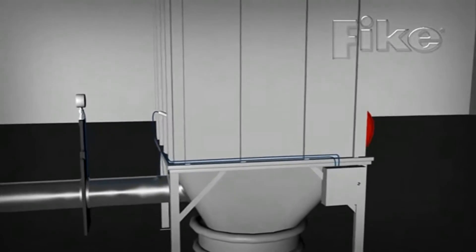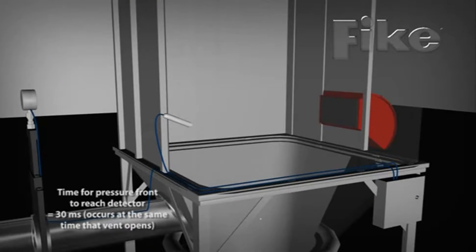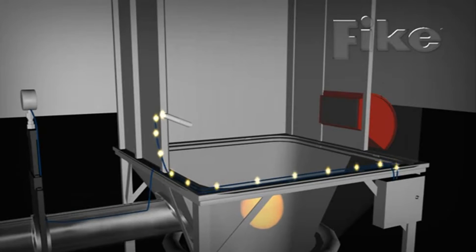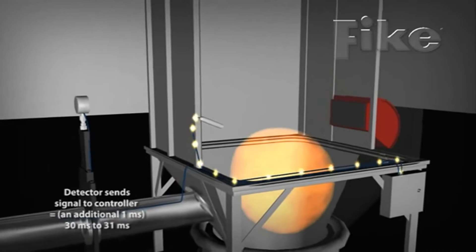It is also necessary to isolate the deflagration, preventing the transmission of the flame into interconnected vessels. As the fireball grows, the detector rapidly captures the pressure spike and sends a signal to the control module, which tracks the pressures, capturing four readings every millisecond.